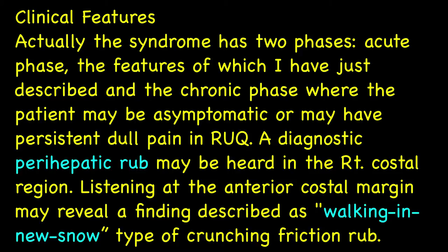Actually, the syndrome has two phases — the acute phase, the features of which I have just described, and the chronic phase, where the patient may be asymptomatic or may have a persistent dull pain in the right upper quadrant. A diagnostic perihepatic rub may be heard in the right costal region. Listening at the anterior costal margin may reveal a finding described as a 'walking in the snow' type of crunching friction rub.